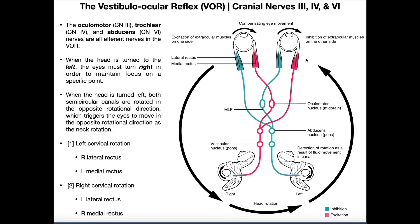When you do that, assuming you have a normal response, as you rotate your head in one direction, your eyes are going to have a compensatory rotation in the opposite direction in order to maintain the gaze on that spot. So if you rotate your head to the left, your eyes rotate rightwards. If you rotate your head to the right, your eyes would rotate leftwards — they're always going to rotate in the opposite direction.